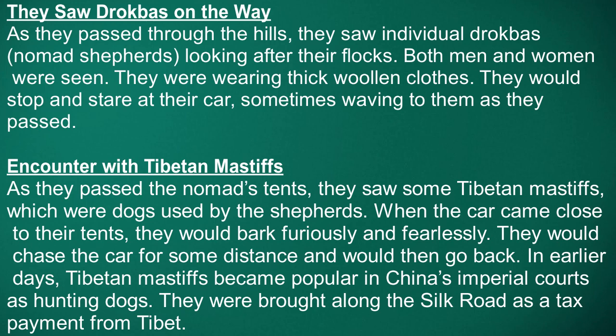The third major subheading is 'Encounter with Tibetan Mastiffs.' As they passed the nomads' tents, they saw some Tibetan Mastiffs, which are dogs used by the shepherds. When the car came close to their tents, they would bark furiously and fearlessly, chase the car for some distance, and then go back. In earlier days, Tibetan Mastiffs became popular in China's imperial courts as hunting dogs and were brought along the Silk Road as a tax payment from Tibet.